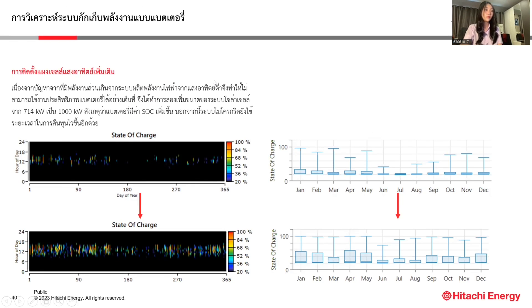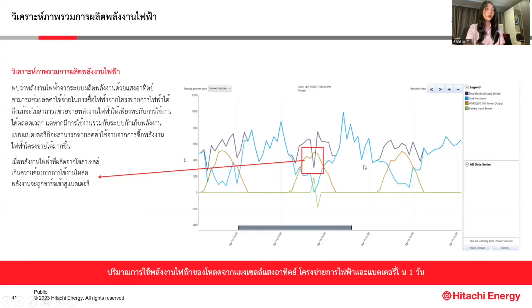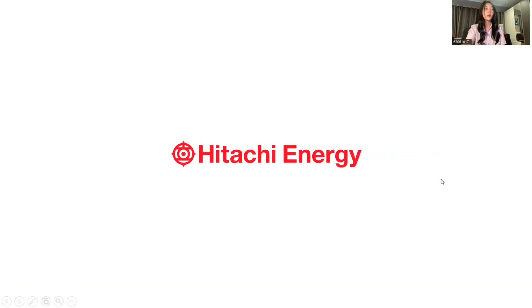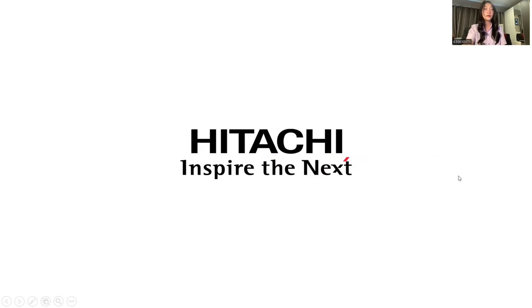Due to the problem of low excess energy production from the solar panel system, the battery system cannot operate efficiently. To address this, we increase the solar panel system's capacity from 714 kW to 1,000 kW, resulting in a higher state of charge (SOC) in the batteries. Additionally, the microgrid system achieves a shorter payback period. In summary, the solar panel system helps reduce electricity production costs, even though it doesn't always supply electrical energy to the loads. However, when integrated with the battery storage system, it can significantly improve electricity production efficiency. This concludes the presentation. Thank you for your attention.